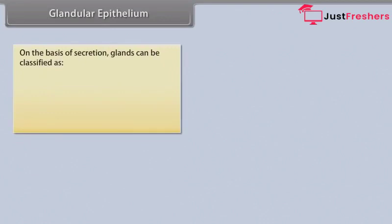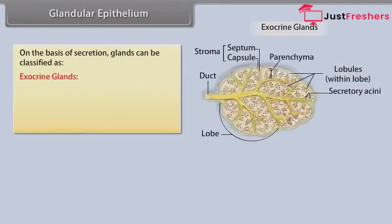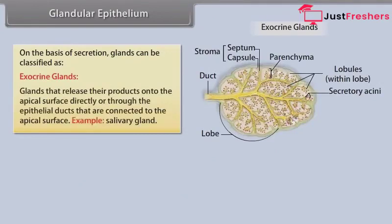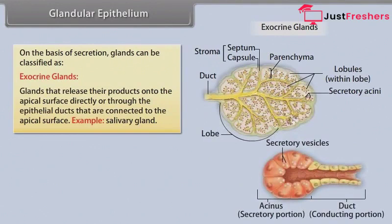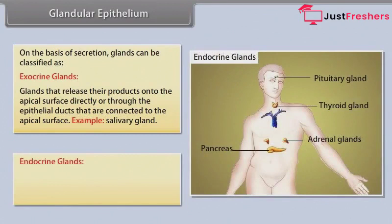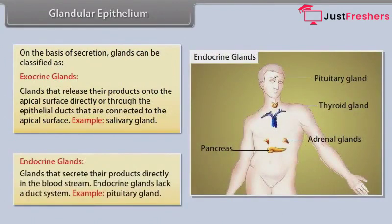On the basis of secretion, glands can be classified as exocrine glands — which release their products onto the apical surface directly or through epithelial ducts — for example, the salivary gland; and endocrine glands — which secrete their products directly into the bloodstream and lack a duct system — for example, the pituitary gland.